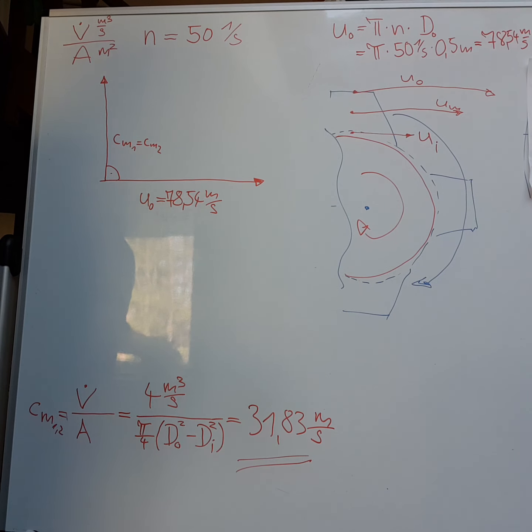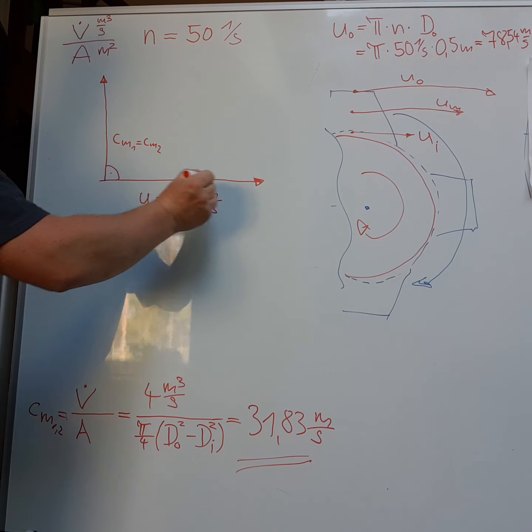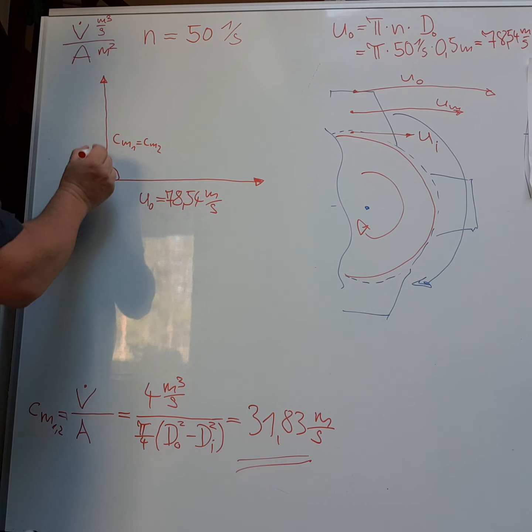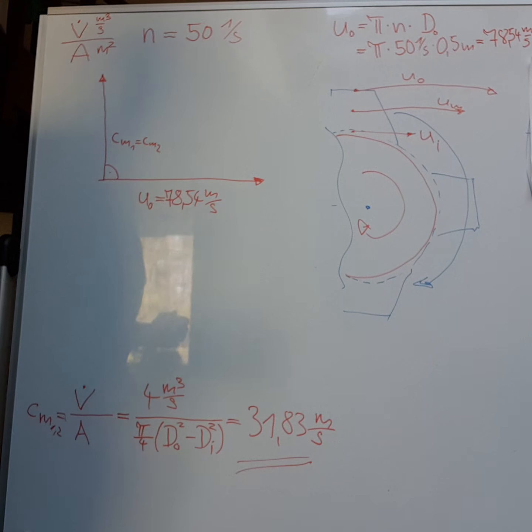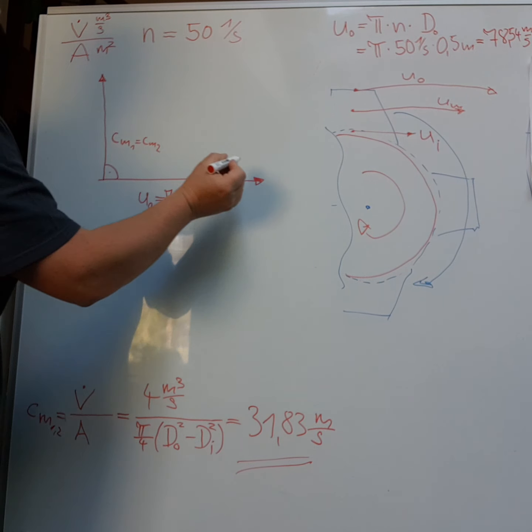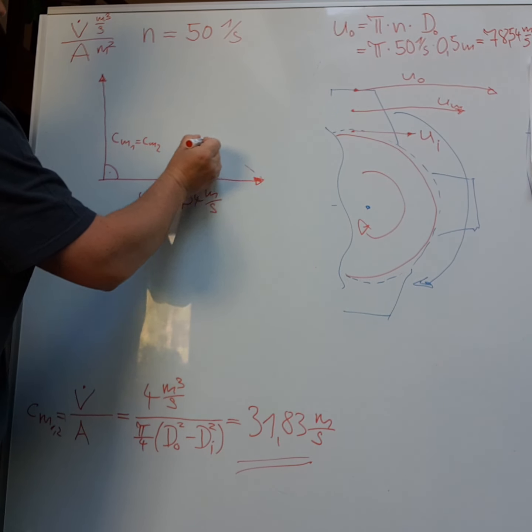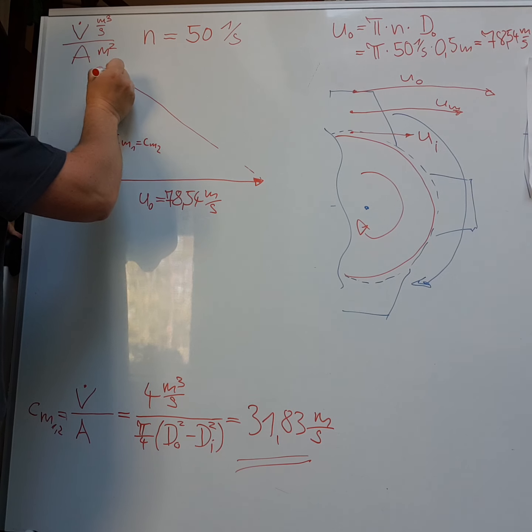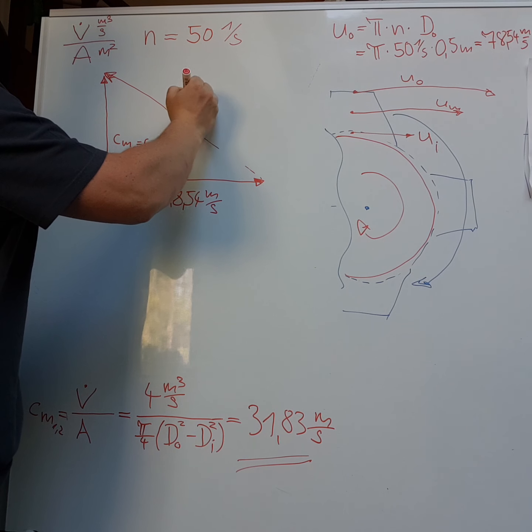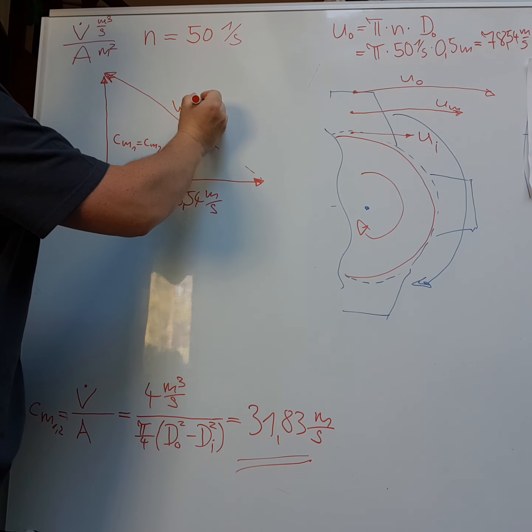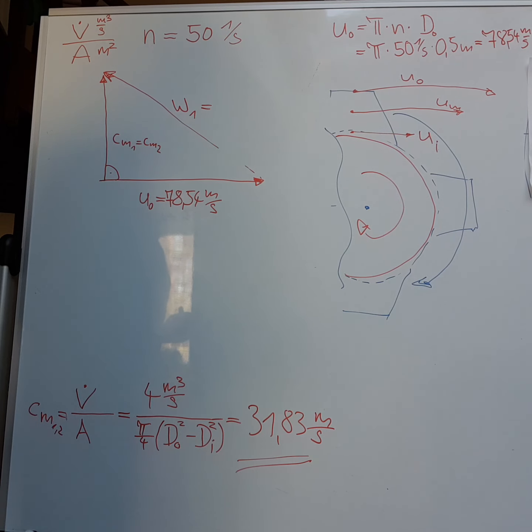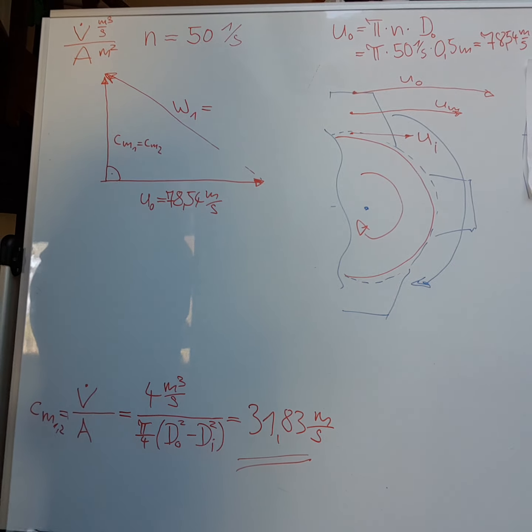And so we have two vectors. We have this U vector, we have the C vector. And now we can calculate the W1 vector by vector geometry.